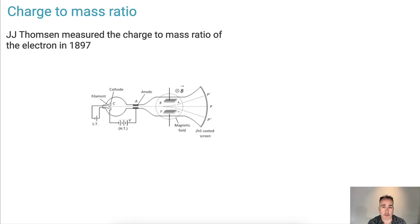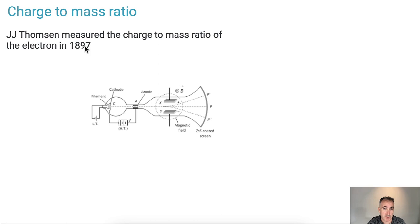We're going to be discussing charge-to-mass ratio and the experiment done to determine this and what we can use it for. JJ Thompson is widely recognized as doing this — he measured the charge-to-mass ratio of the electron back in 1897. This was before Millikan and Fletcher actually figured out the elementary charge, so the best Thompson could do was figure out the charge-to-mass ratio.